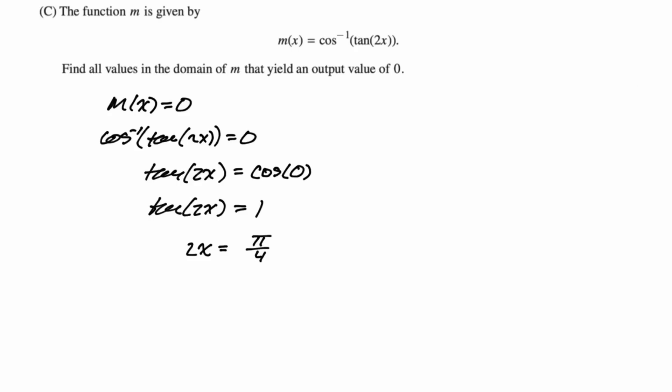So 2x could be π/4. But then what is the period of tangent by itself? The period of tangent is π. So every time you add π to π/4, you're going to get this to work again. So we'll just say plus π times n. And then what we do is just divide by 2. So x is π/8 plus π/2 times n. And then we need to stipulate n must be an integer. So n is an element of the integers.